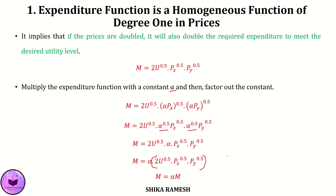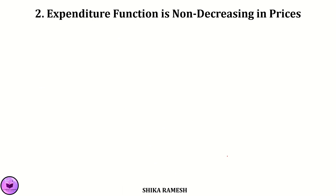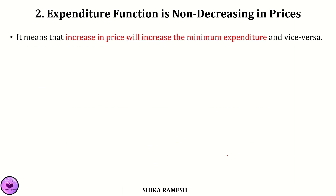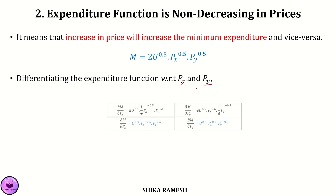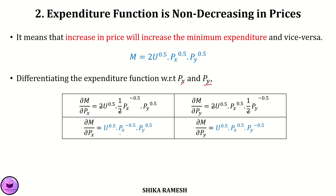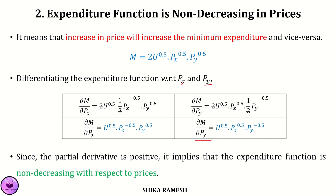The second property is that the expenditure function is non-decreasing in prices. It means that an increase in price will increase the minimum expenditure and vice versa. Differentiating the expenditure function with respect to px and py, we get ∂m/∂px = u^0.5 × px^(−0.5) × py^0.5 and ∂m/∂py = u^0.5 × px^0.5 × py^(−0.5). Since the partial derivatives are positive, the expenditure function is non-decreasing in prices.